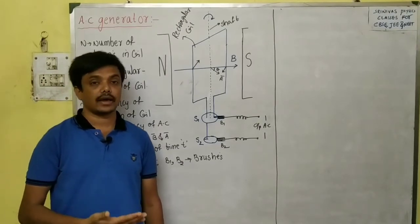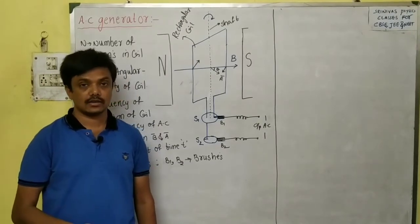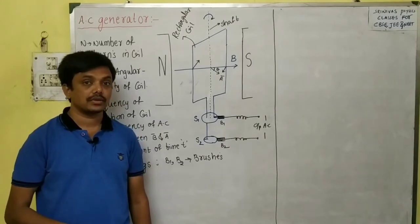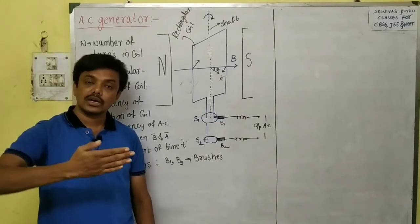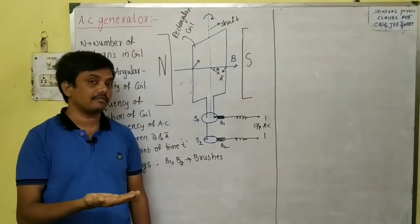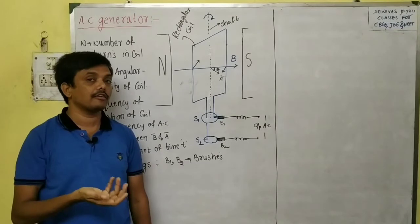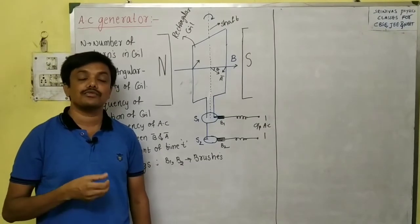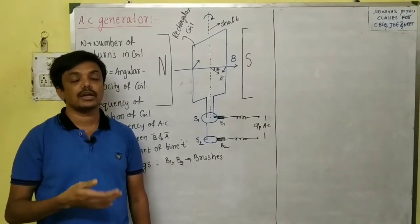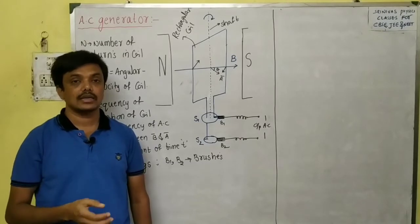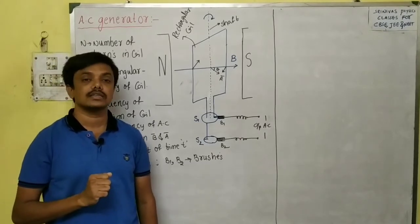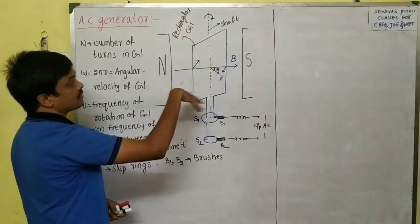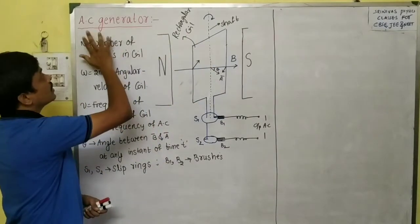How do we change the magnetic flux linked with a coil? If a coil rotates in the magnetic field, then the flux linked with the coil changes. Alternatively, if you rotate the magnets, then also the magnetic field changes. Now here is the construction of the AC generator.